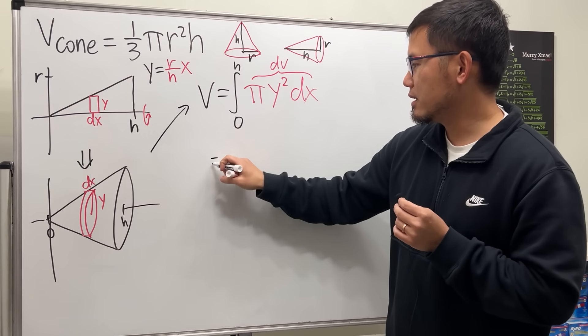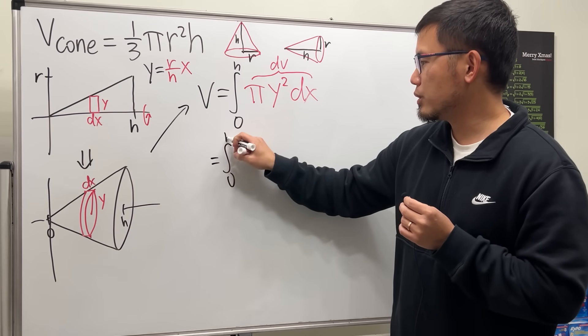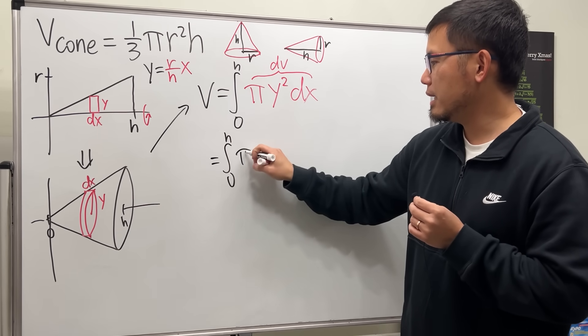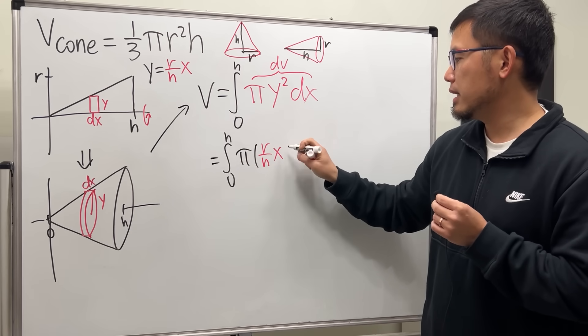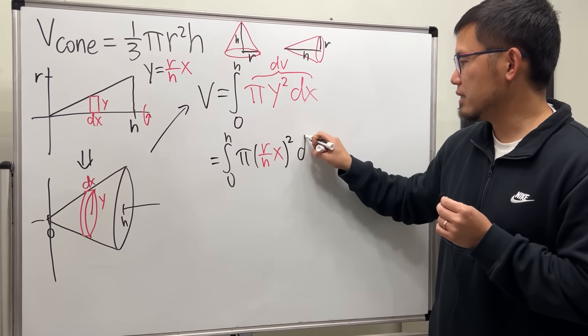So let's just focus on the integration now. Going from 0 to h, we have the pi. And the y is r over h times x. And then we square that. And then we have the dx.